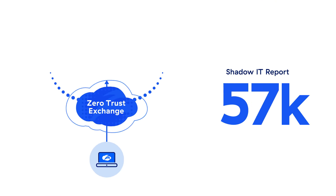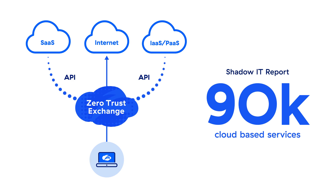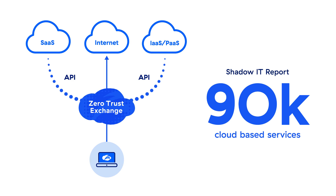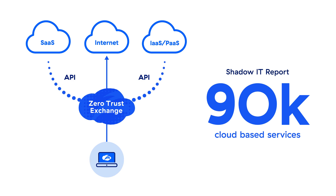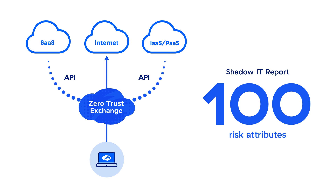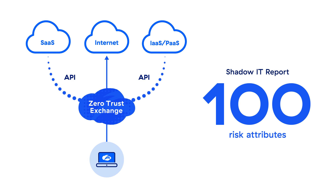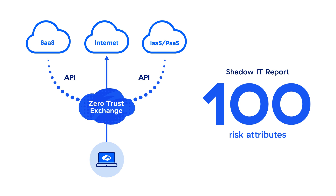Our Shadow IT report is designed with a huge catalog that contains 90,000 cloud-based services and 130,000 browser extensions. We highlight application risk based on 100-plus risk attributes that not only look at risky hosting characteristics, but also risky API interactions.